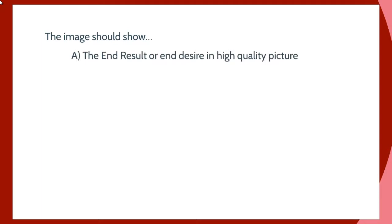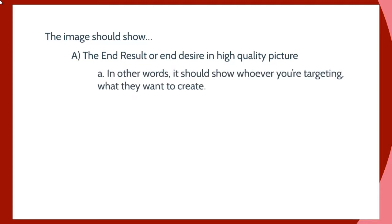The image should show the end result or end desire in a high quality picture — showing whoever you're targeting what they want to create. For example, if somebody puts up an image of a tasty chicken parmesan dish, in the mind of your prospect they're thinking that looks really good, and they'll click because they want to know how to create that dish. That is the end result, so choose the right image.